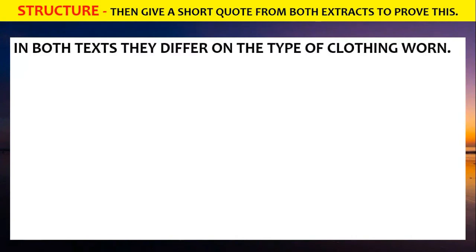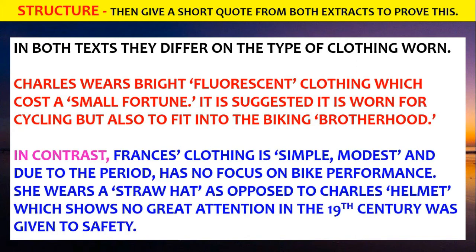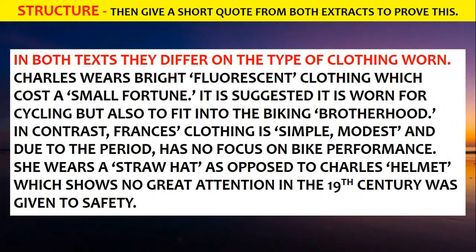For Point 2: 'In both texts they differ on the type of clothing worn.' Again, just use quotes to back it up. Charles wears bright, fluorescent clothing which cost a small fortune. It's suggested it's worn for cycling, but also to fit into the biking brotherhood. In contrast, Francis' clothing is simple and modest, and due to the period there's no focus on bike performance. She wears a straw hat as opposed to Charles' helmet, which shows no great attention to speed. All I'm doing is using the quotes I've picked out to back up my point.